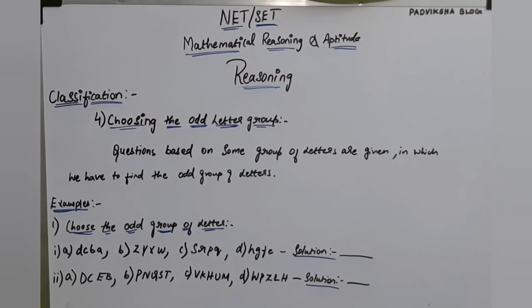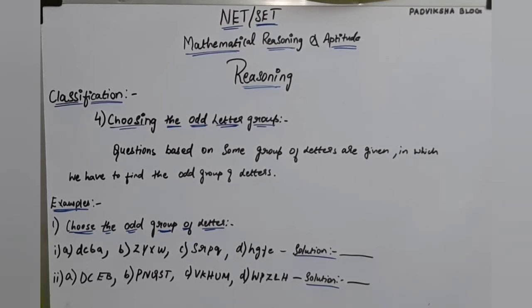The question is: choose the odd group of letters. The first question is A) DCBA, B) ZYXW, C) SRPQ, D) HEFG or HGFE. We have to find the similarities and identify which one is the odd group.